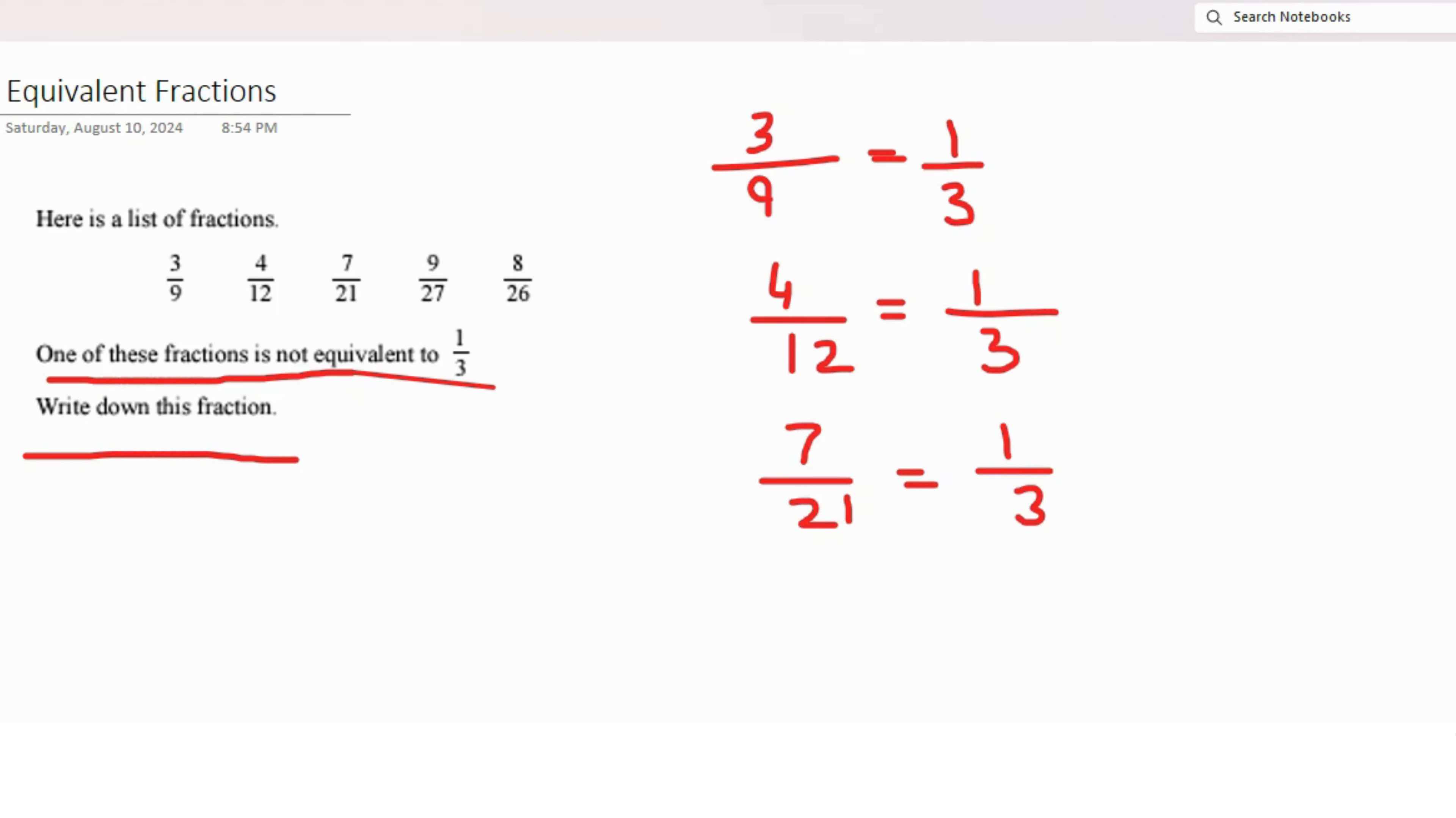Next we have 9 out of 27. If you see, 9 times 1 is 9 and 9 times 3 is 27, so it's 1 out of 3 again.